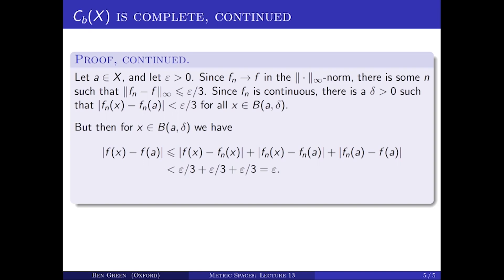Each of those three terms is less than epsilon over three by what I've just said, and the sum of three epsilon over threes is epsilon. So what I've shown is that if the distance from x to A is less than delta, then the distance from F(x) to F(A) is less than epsilon, which is exactly what it means for F to be continuous at A. So it follows that indeed F is continuous at A. Since A was an arbitrary point, F is in fact a continuous function everywhere. And it's definitely a bounded function — we already know that. So it's a bounded continuous function. And that concludes the proof.